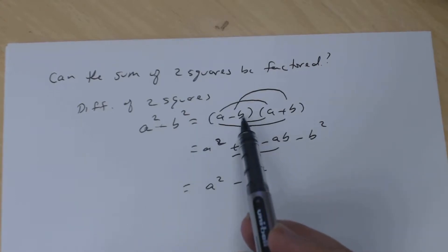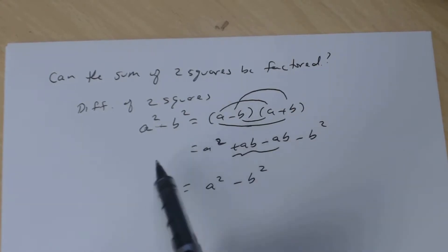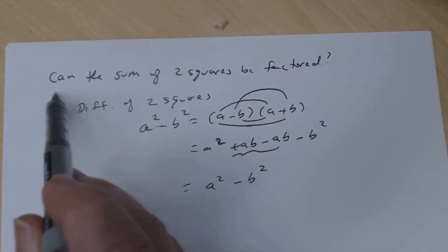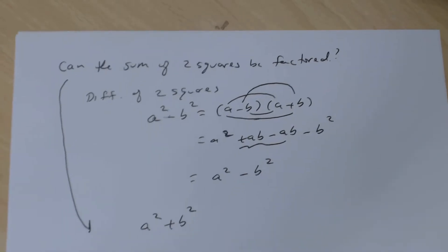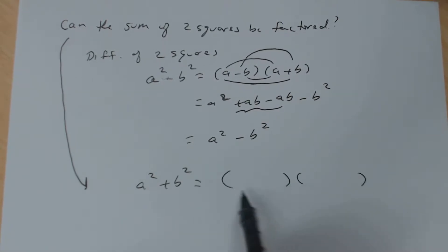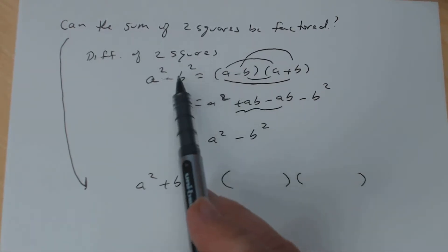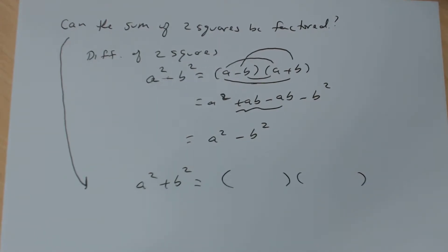So the difference of two squares can be factored as (a - b)(a + b). Now what we're interested in is: can the sum of two squares — a² + b² — be factored as a product of two binomials like we did with the difference of two squares? That's the goal.